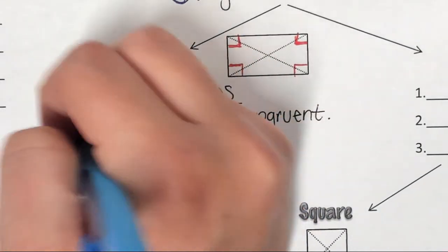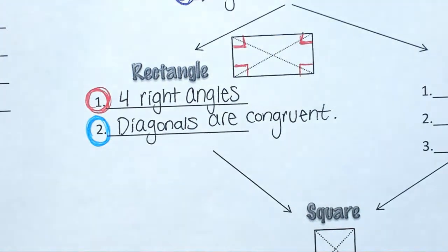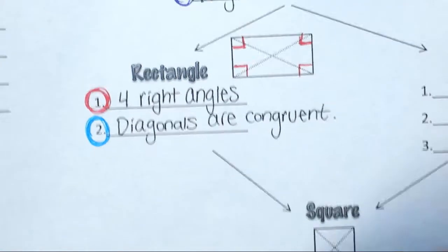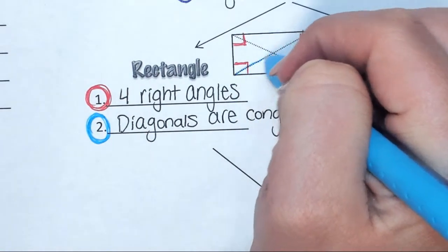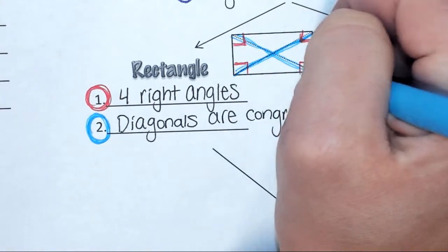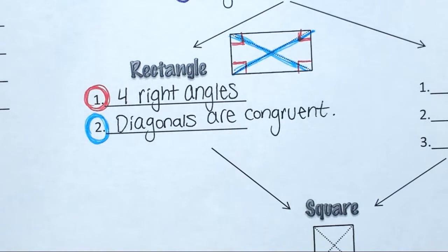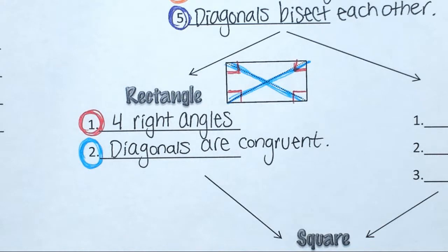Just like yesterday, grab a different color and go ahead and circle number two in that color. Just to show that the diagonals are congruent, we're going to go ahead and shade them in that color. So that diagonal is congruent to that diagonal. Those are the two properties that are specific to a rectangle — it only occurs with a rectangle.